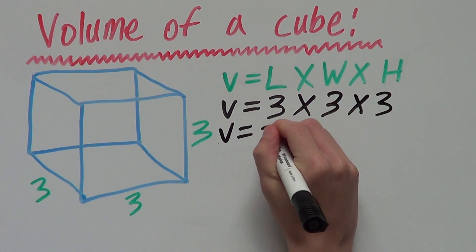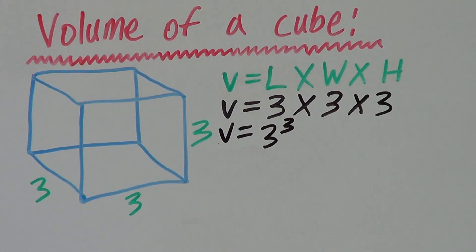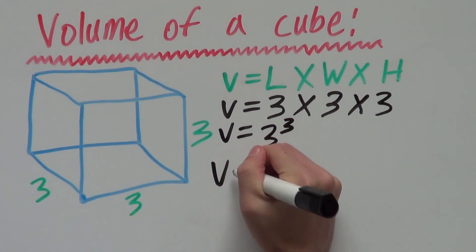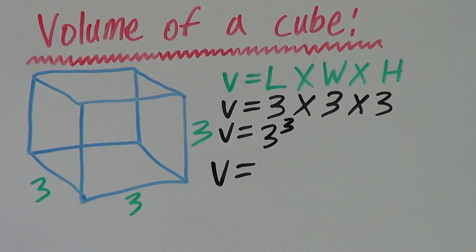That's also the same as 3 cubed. Once we work that out, 3 times 3 times 3, so 3 times 3 is 9, times another 3 is 27.